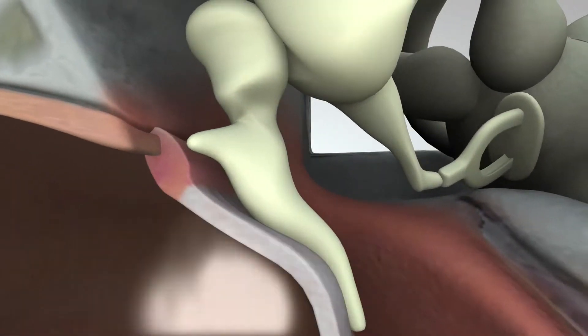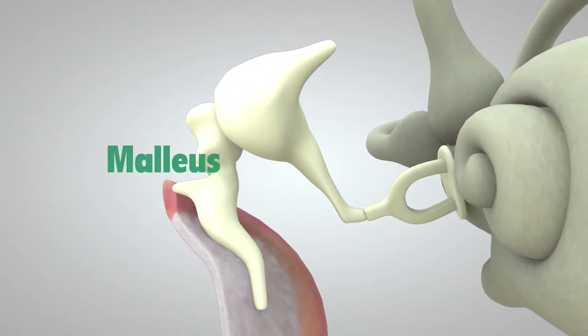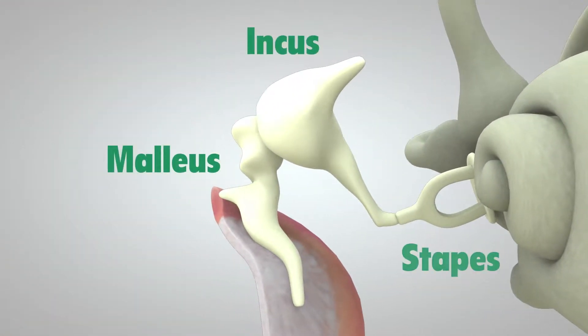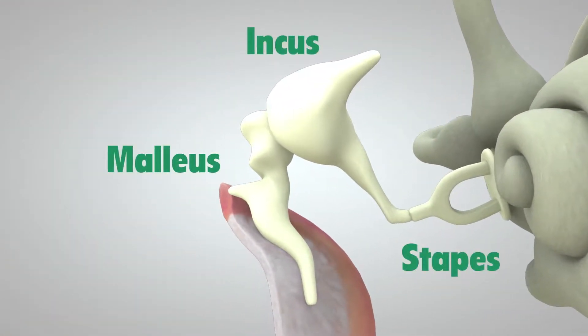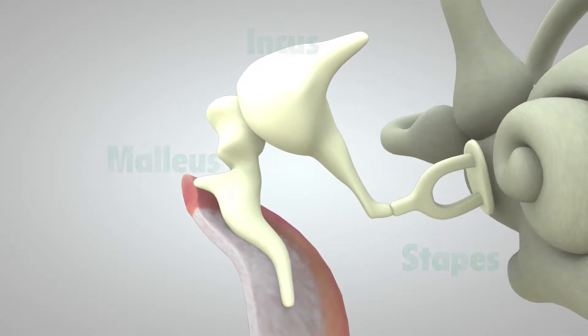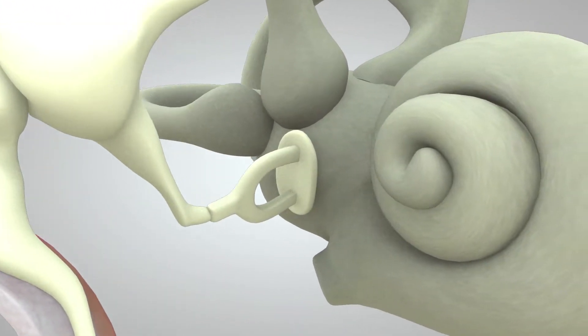Which in turn vibrates three tiny bones called the malleus, incus, and stapes. These bones amplify or increase the sound vibrations and send them to the cochlea.